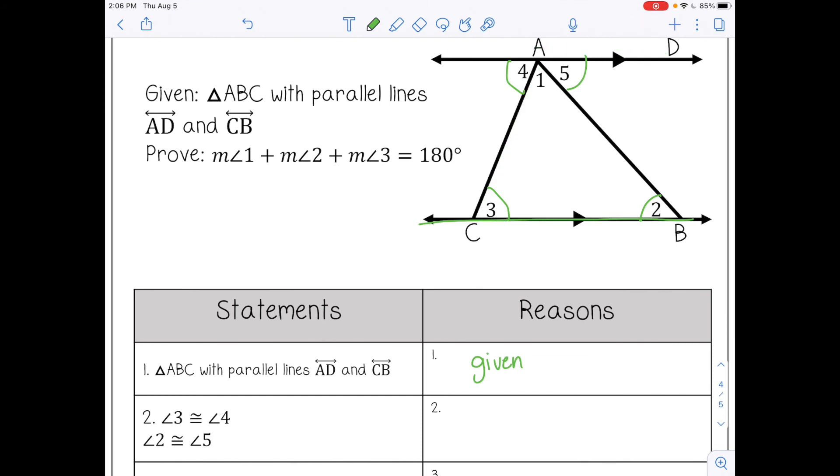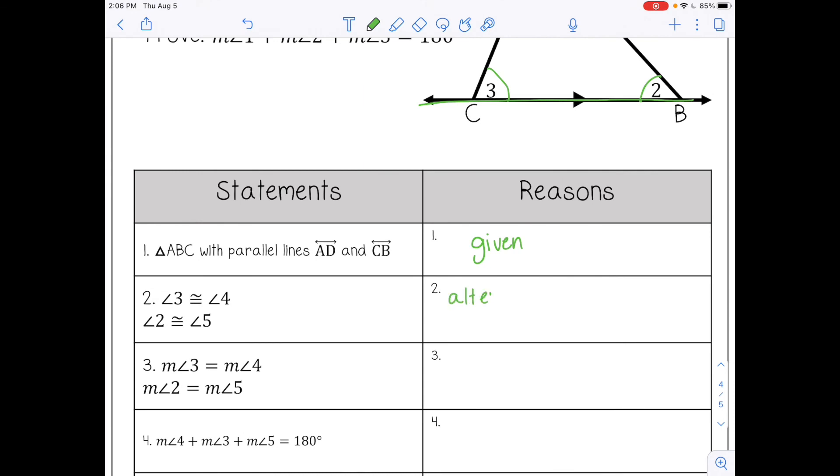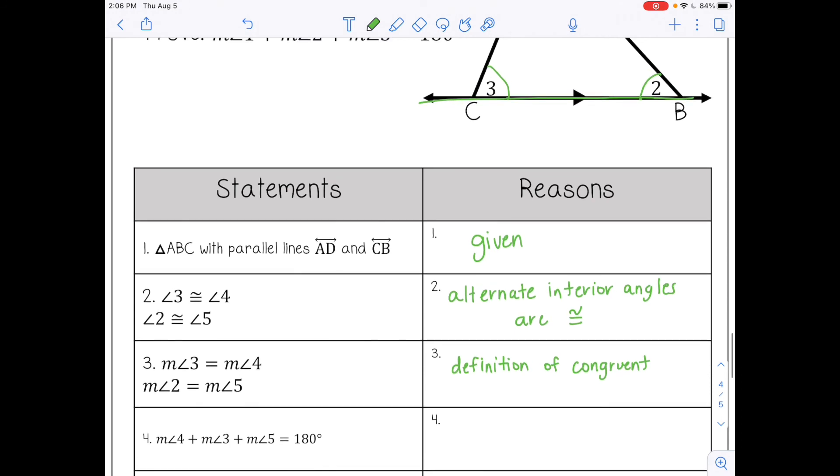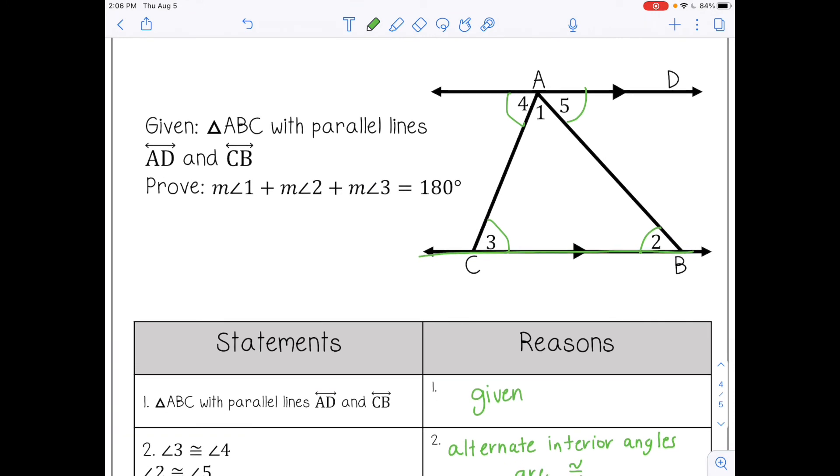We have parallel lines cut by transversals here. So that forms alternate interior angles, and those are always congruent. And then number three says basically the same thing as number two, except it's talking about their measures. We know the figures are congruent, but that also means their measures are equal. That's the definition of congruent. Congruent means equal. Number four says that the measure of angle 4 plus 3 plus 5 equal 180.